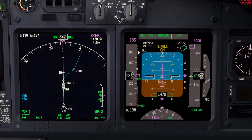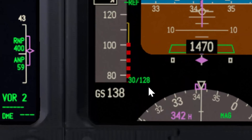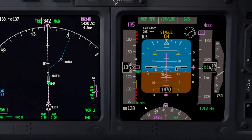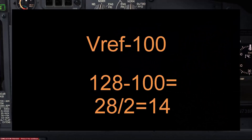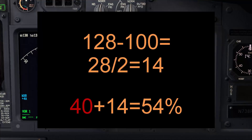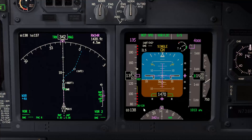The second technique is a formula I was shown by a senior captain when I first started flying the airplane. You check your Vref for flaps 30 - in this example we have 128. Take the number above 100, which is 28. Divide that by 2, giving 14. Add it to the constant 40. So 28 divided by 2 is 14, plus 40 equals 54 percent N1 as your reference.